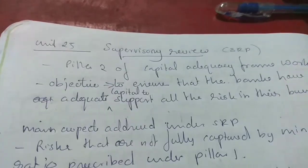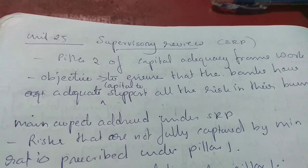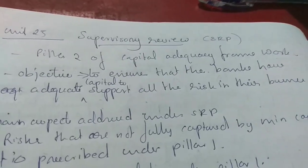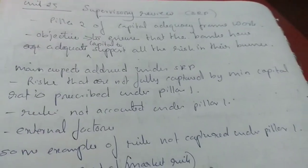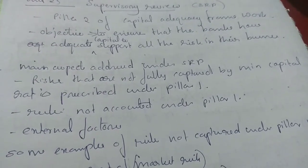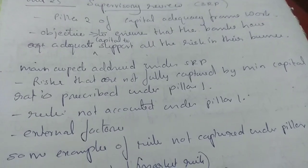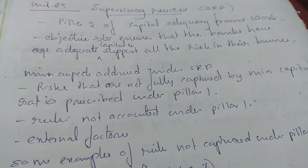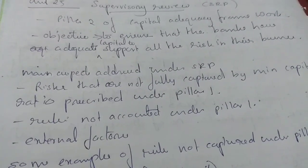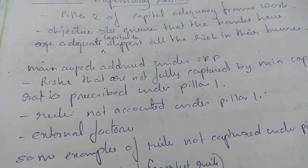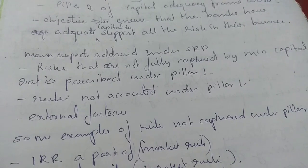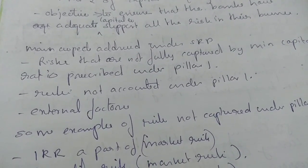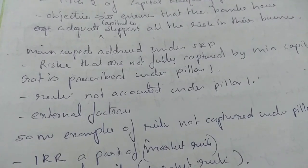Supervisory Review Process, or SRP, is Pillar 2 of the capital adequacy framework. The objective of SRP is to ensure that banks have adequate capital to support all the risks in their business. The main aspect addressed under SRP is risks that are not fully captured by the minimum capital ratio prescribed under Pillar 1. Risks not accounted for under Pillar 1 are captured here, and external factors also come under SRP.